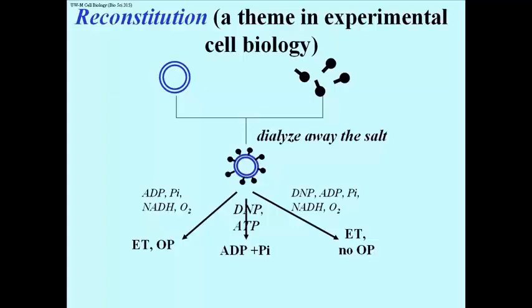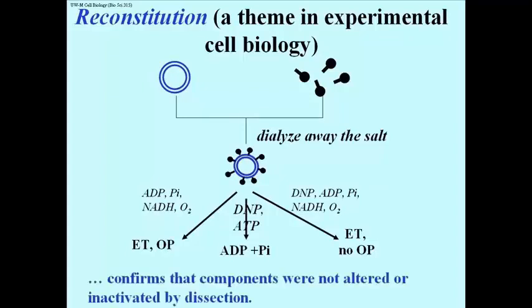And of course, the reconstituted vesicle behaved just like the original studded vesicle. In the presence of DNP and ATP, the ATP would be hydrolyzed. In the presence of DNP and NADH and oxygen, there would be electron transport. But even if ADP and inorganic phosphate were also added, no ATP would be made. That is, there would be no oxidative phosphorylation. These reconstitution experiments confirmed that the components were not altered or inactivated by this mitochondrial dissection.